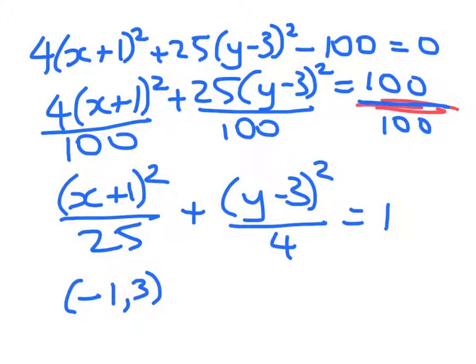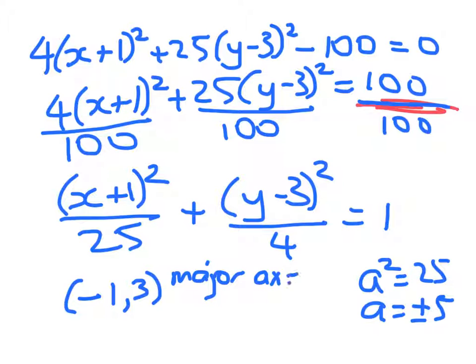And we've got a² = 25, so a = ±5. So the major axis has got a length of 10, that means the long axis. And the minor has got a length of 2 times 2, so 4.